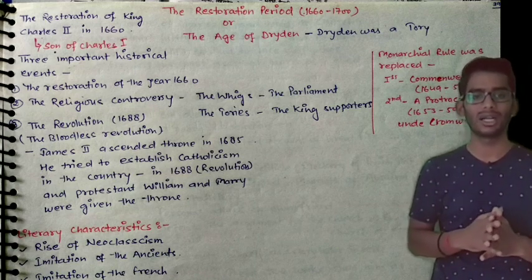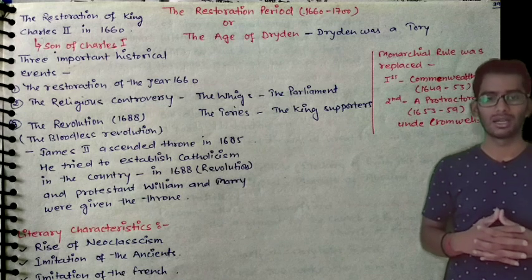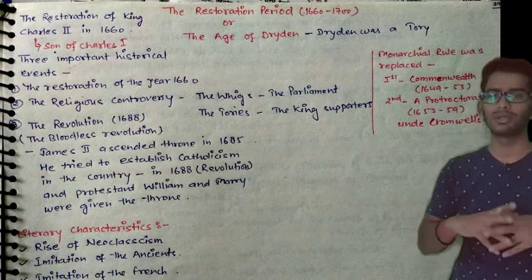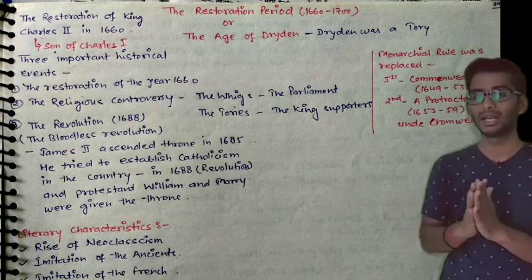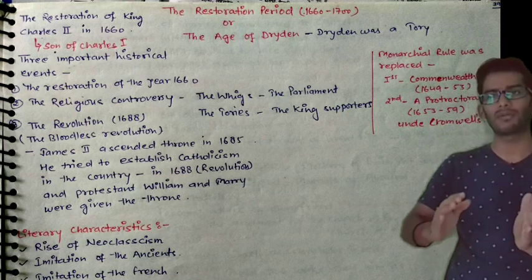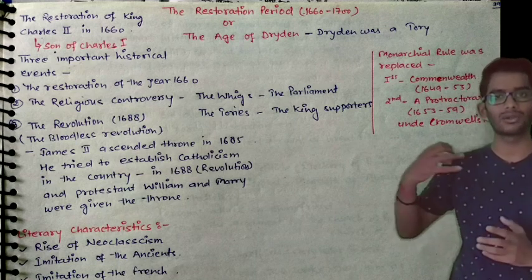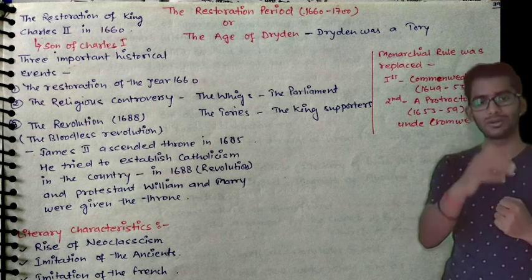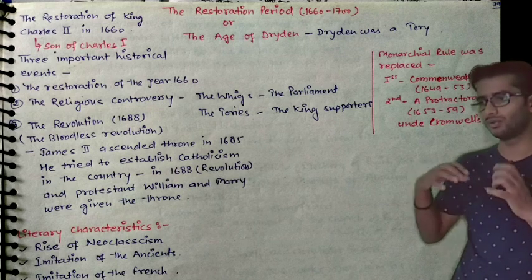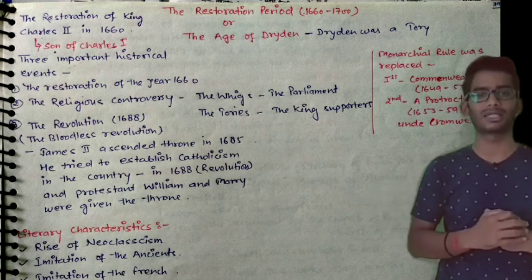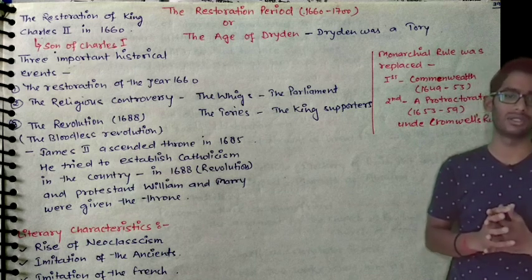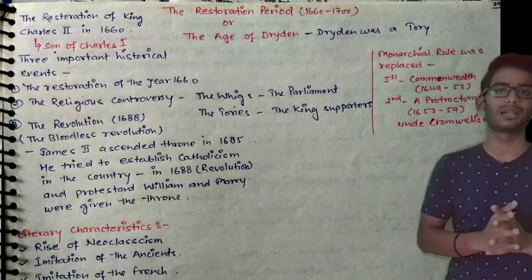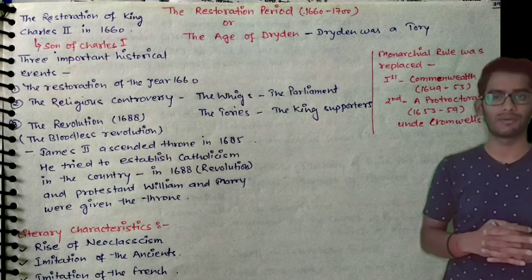If we talk about literary characteristics, at the end you can see the rise of Neoclassicism. Classicism means following classic writers and trying to write as they did — following their rules. Neoclassicism means following those same ancients — imitation of the ancients. Those who follow this are called Classicists, as they follow many rules while writing. Third is the imitation of French writers.